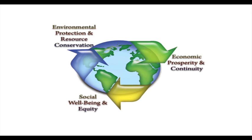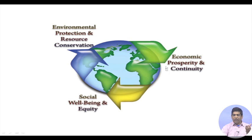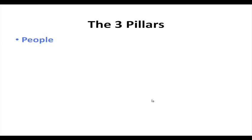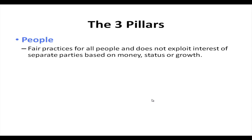The same thing expressed in a different way: you have environmental protection and resource conservation as the environmental aspect, then economic prosperity and continuity as the economic aspect, and then social well-being and equality as the social aspect. The social aspect means fair practice for all people — it does not exploit the interests of separate parties based on money, status, or growth. It should not happen that all hazardous waste is sent to poor countries, or all electronic waste is dumped in Asia or Africa from European and American countries — that is not fair.